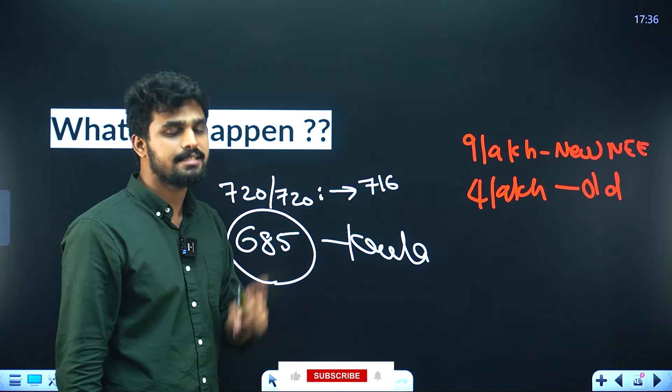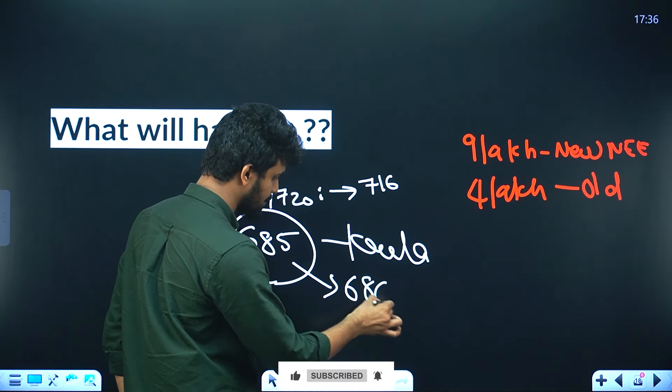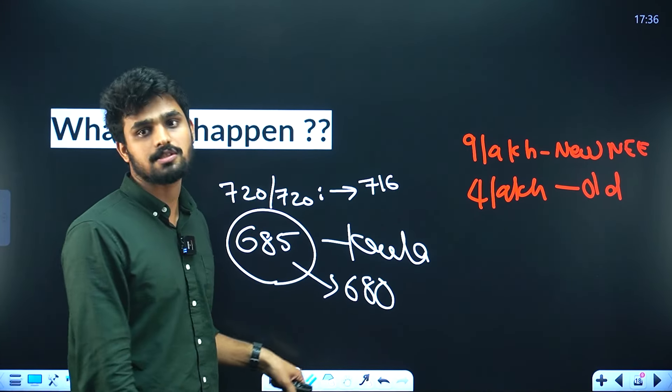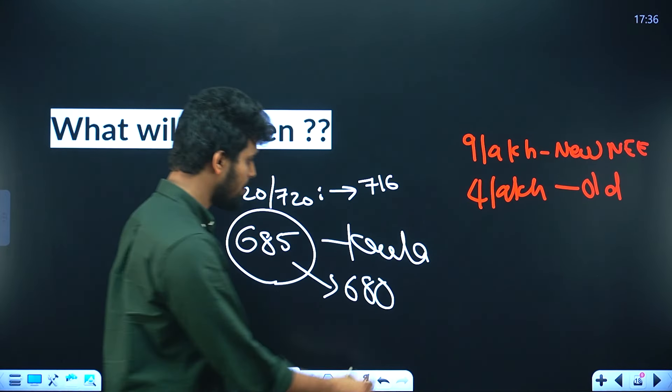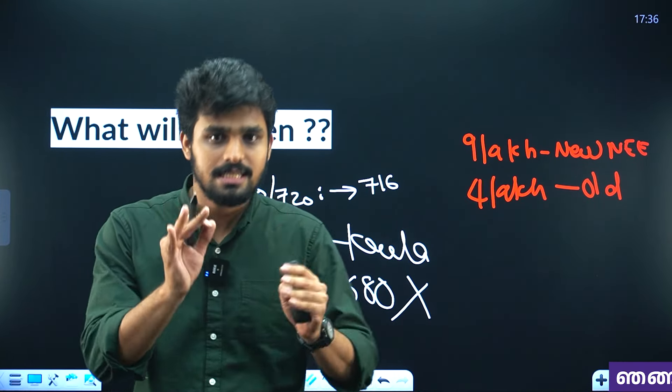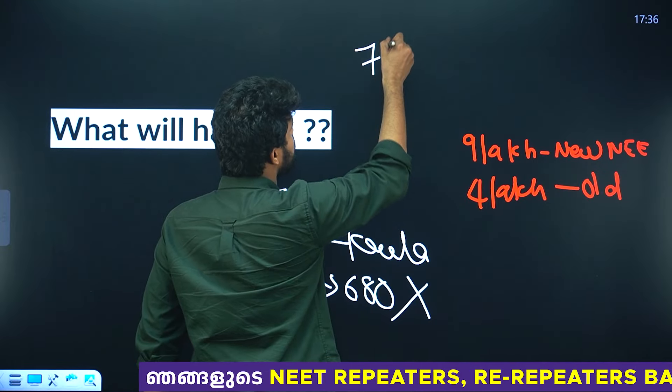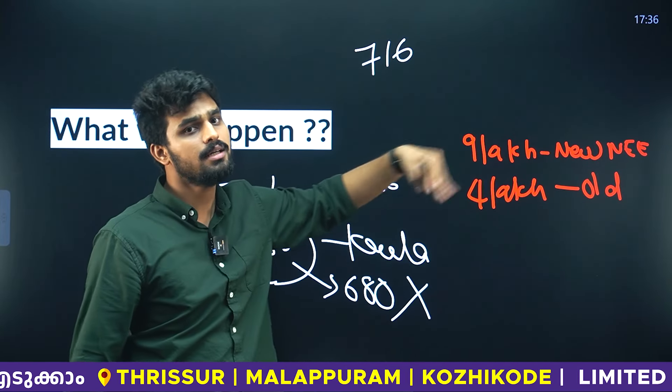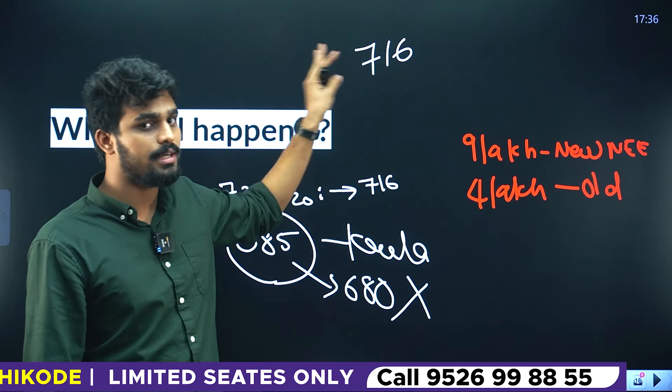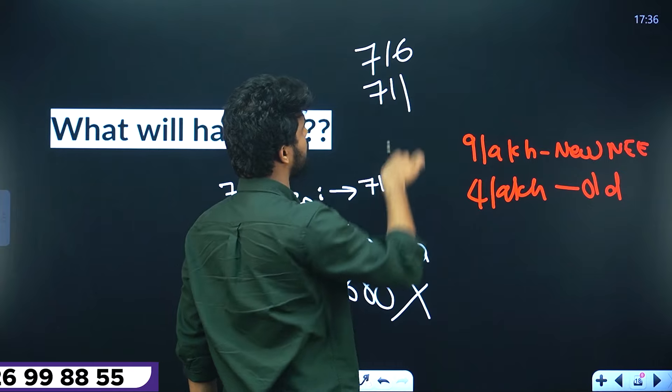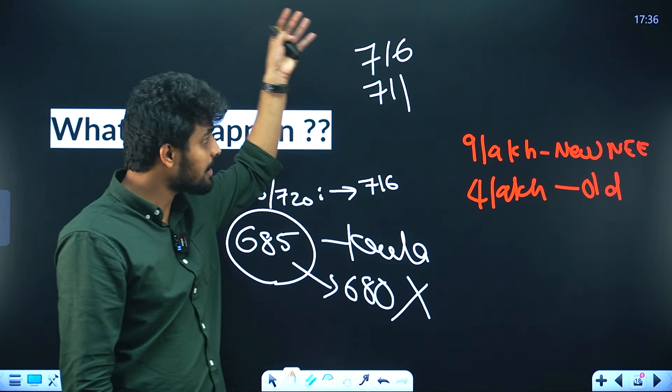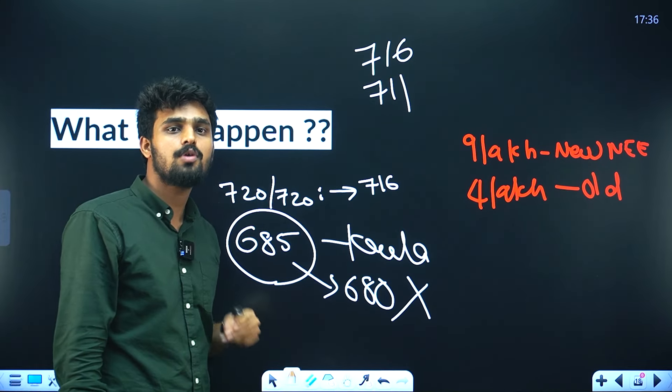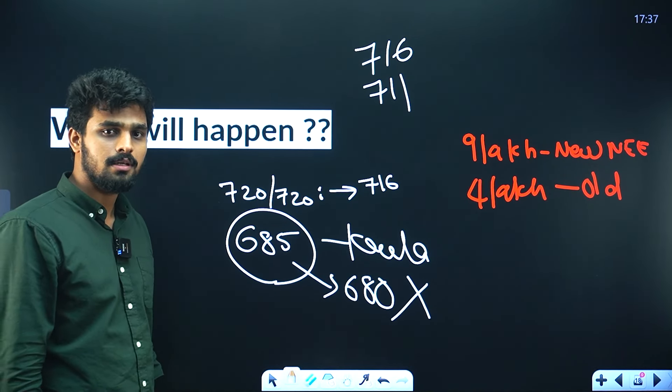If one person gets marks from old NCERT and another gets negative marks, they end up at different scores. Some people say the maximum is 709 according to one interpretation. If that question is given grace marks according to old NCERT, this is another possibility.